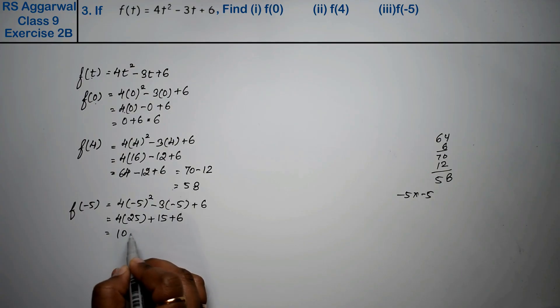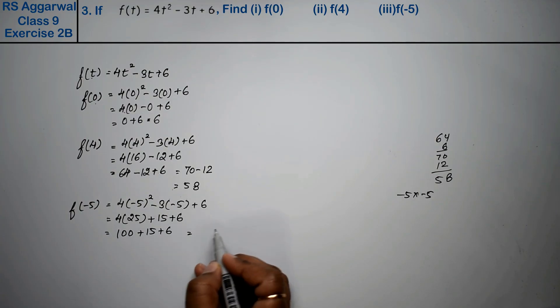4 times 25 is 100, plus 15, plus 6. Adding all three together, that is 121 is the answer.